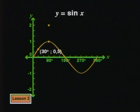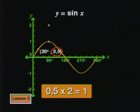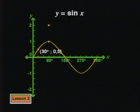Let's look at another point on the parent graph. What about this point, where x is 30 degrees and y is 0.5? If we double that y value, we get a half times 2, which is 1. So let's plot that point. This is also twice as far from the x-axis as the point on the parent graph.